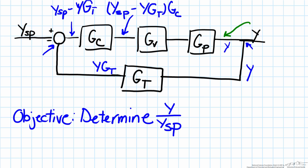We can take advantage of the distributive property and of the associative property to multiply through the other two blocks, which will leave us with ysp minus yGt multiplied by all three of those blocks Gc, Gv, Gp.